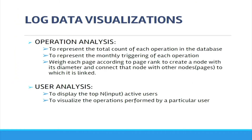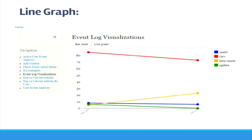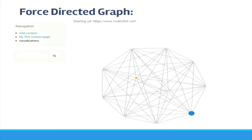Now the log data visualizations. This visualization shows the triggering of each operation for a particular user. We have used D3.js — a JavaScript library. Examiner: So you pass data arrays to the library and it visualizes them? Team: Yes. This visualization is basically a force-directed graph.